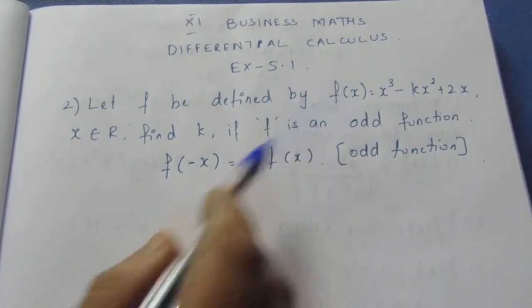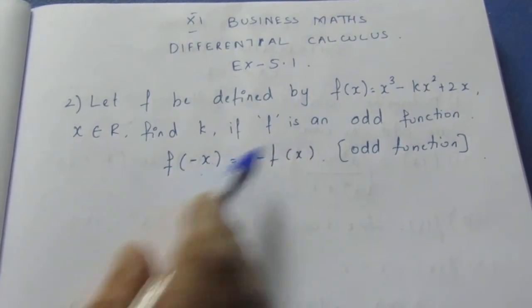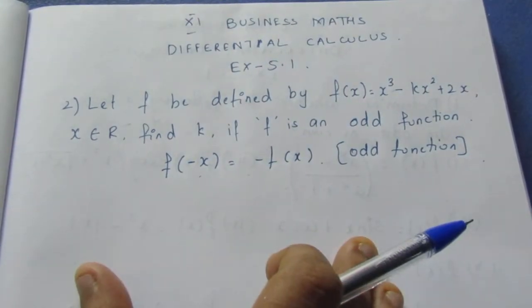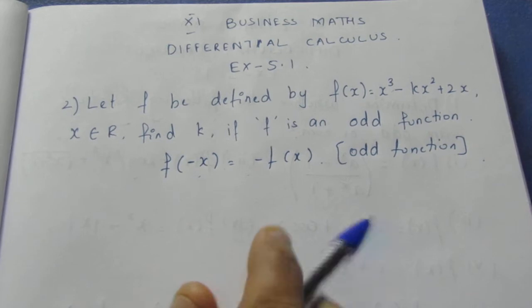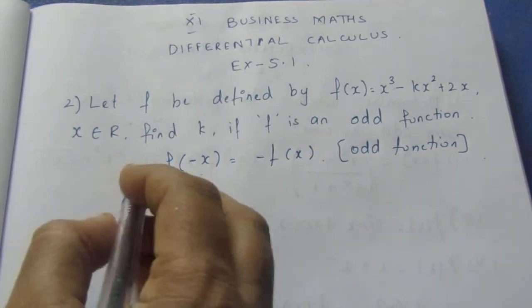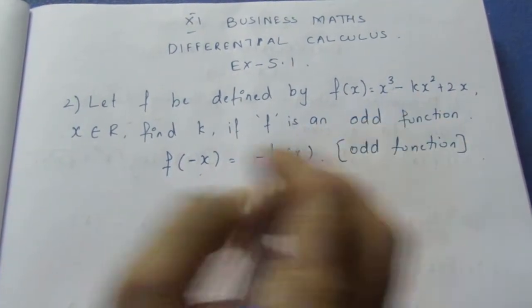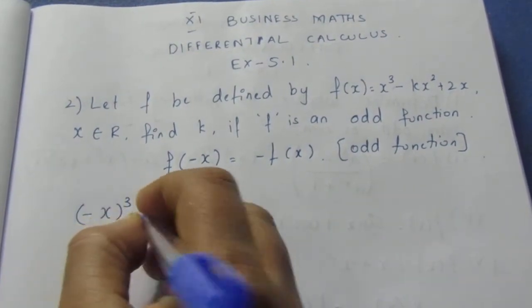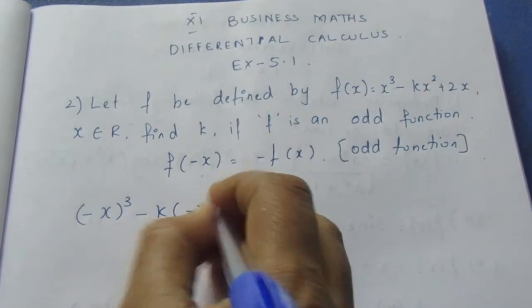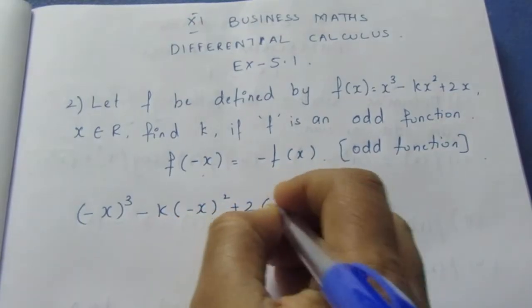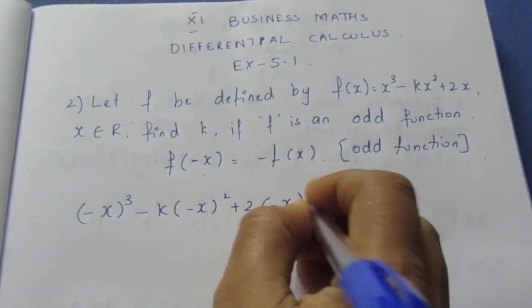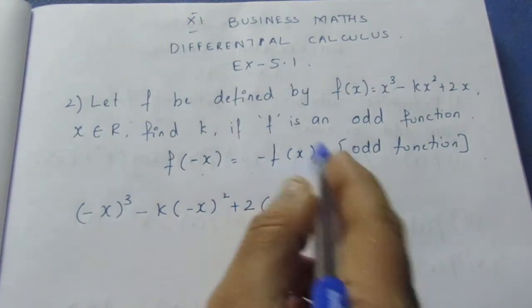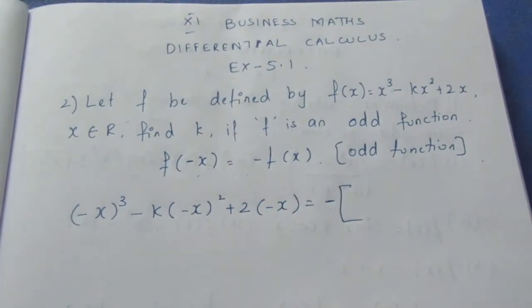Let's compute f(-x) and -f(x). Substituting -x in place of x: f(-x) = (-x)³ - k(-x)² + 2(-x) = -x³ - kx² - 2x.